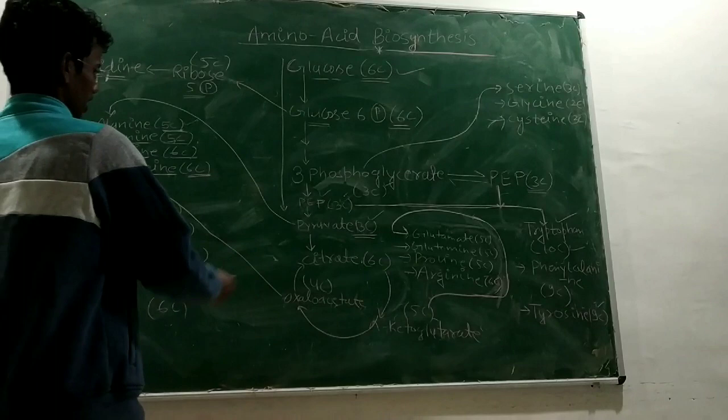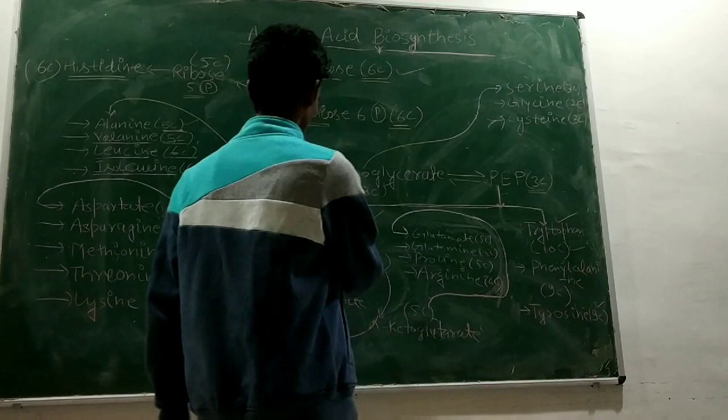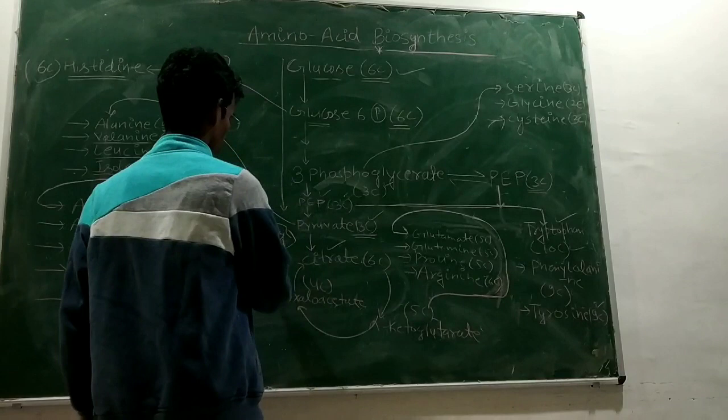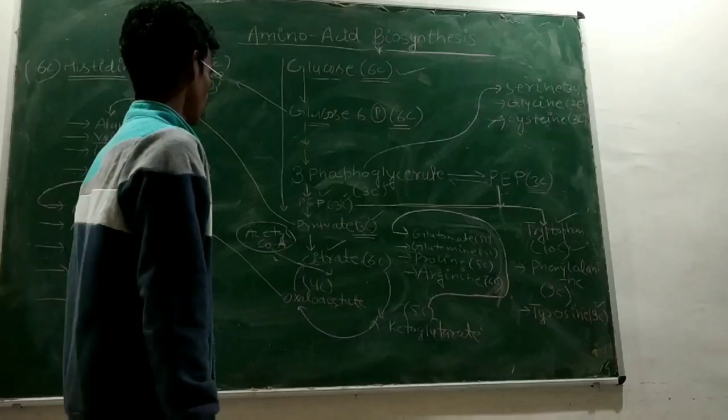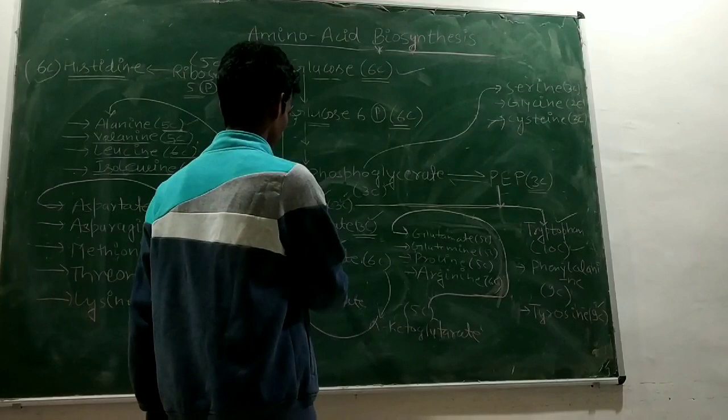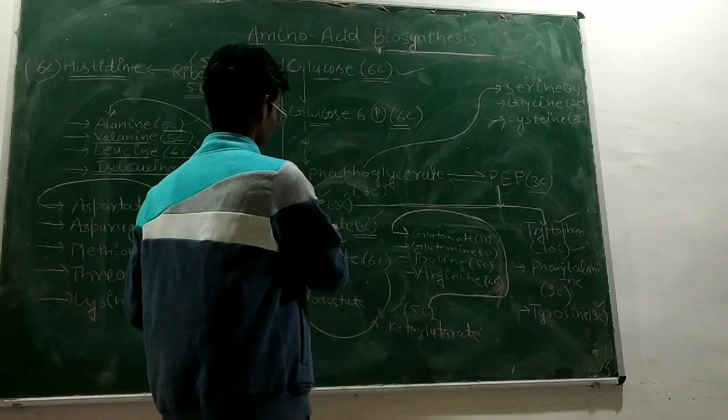Now let's move on to pyruvate. Pyruvate becomes citrate. This is citric acid. We use citric acid in this cycle.